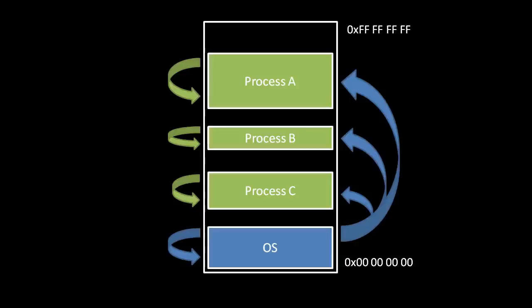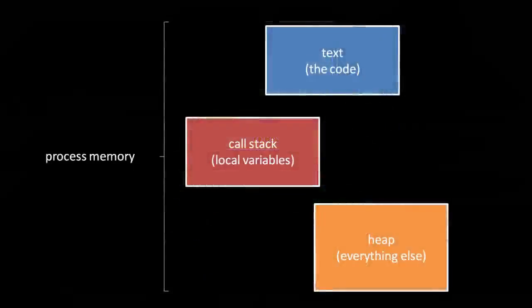To understand how the CPU knows which addresses are allowed for each process, we have to first look at how a process uses memory. Each process uses a portion of its memory for a stack, for a heap, and for storing the process's code itself, in a section confusingly called the text section, even though the code is in binary form. The code section is straightforward — the binary instructions are stored in a contiguous chunk of memory and never modified for the duration of the process, except for the purpose of dynamic linking with shared libraries.